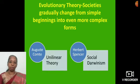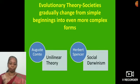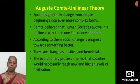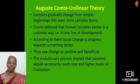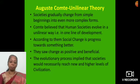Evolutionary theory: societies gradually change from simple beginnings into even more complex forms. For this evolutionary theory, I have taken two authors — namely Auguste Comte's Unilinear Theory and Herbert Spencer's Social Darwinism. Auguste Comte's Unilinear Theory: societies gradually change from simple beginnings into even more complex forms. Comte believed that human societies evolve in a unilinear way, i.e. in one line of development. According to him, social change is progress towards something better. He saw change as positive and beneficial. The evolutionary process implied that societies would necessarily reach new and higher levels of civilization.